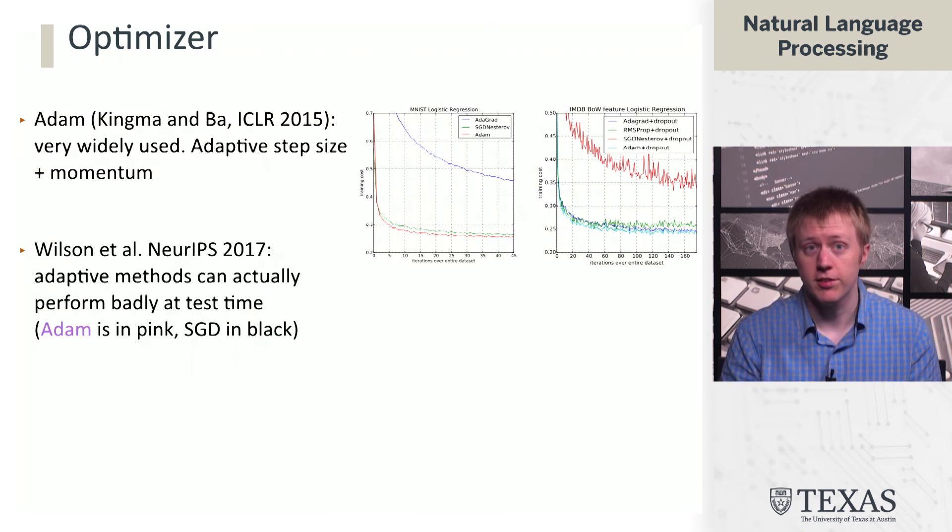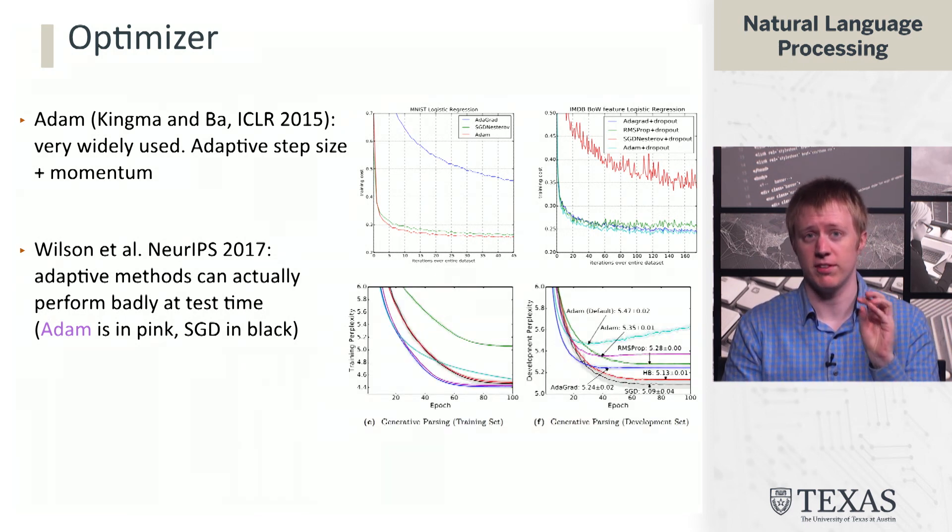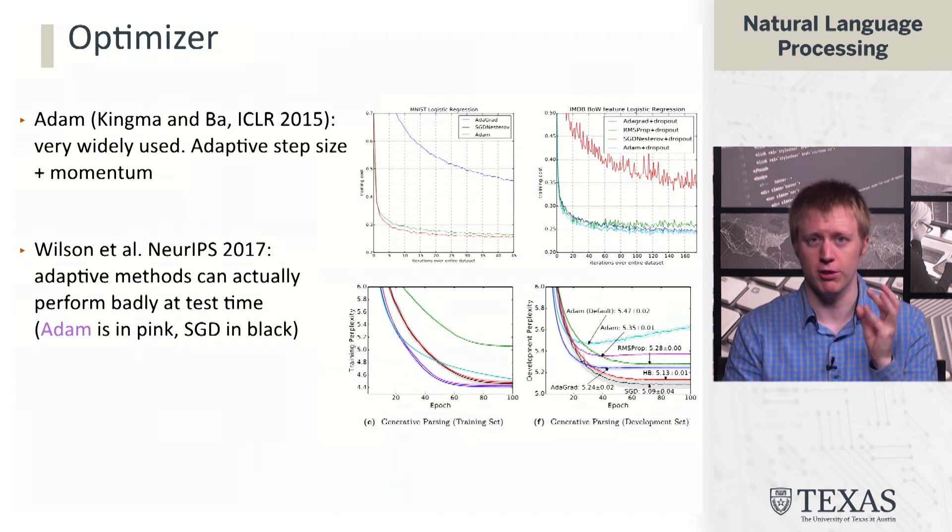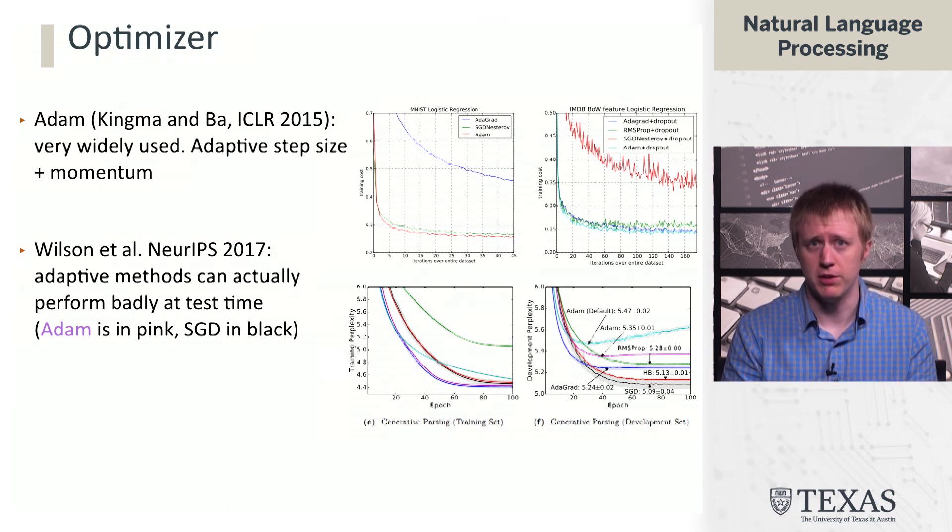There are some results due to Aisha Wilson et al. from NeurIPS 2017 showing that these methods actually might not be the best thing for test time. So on the top, Adam is fitting the data really well, but on the bottom, Adam doesn't actually generalize as well as SGD with carefully tuned learning rates and momentum and things like that. So it's sort of an open question. Adam is going to work well for a lot of what we do in this course, and so that's the recommended one that just works out of the box most of the time.